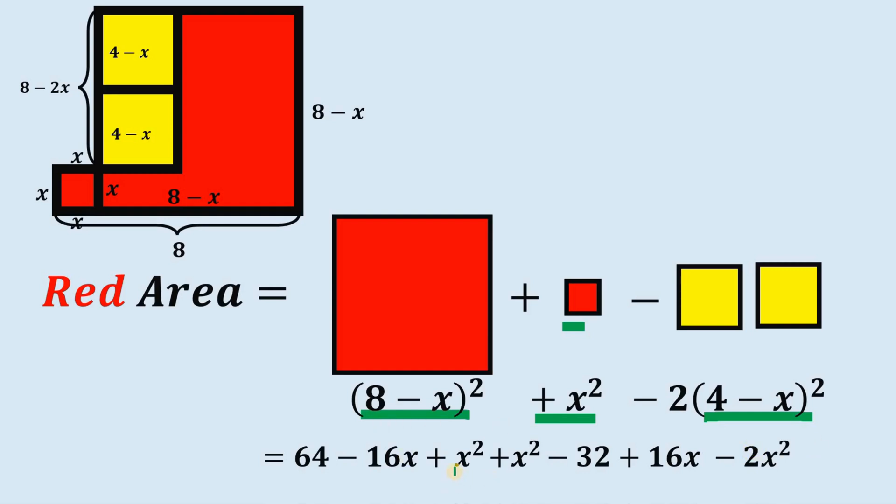Now take note, x squared plus x squared is just 2x squared. So 2x squared positive negative 2x squared is just 0. 16x and negative 16x are 0. And 64 minus 32 is just 32, and this is actually the area of the red shaded region. And that is our answer to this question.